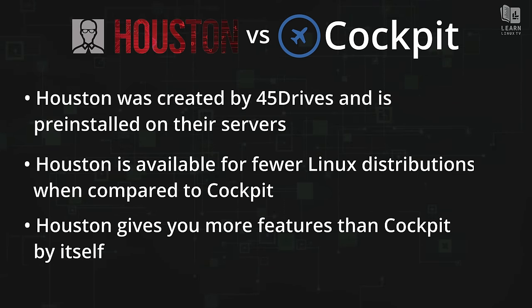Here we have Cockpit from earlier in the video. I'll navigate to the new server I just set up — we set up Houston at port 9090, which is the default port. Nothing is different so far; we'll just accept the certificate warning. I'll type in the credentials for my Linux user account on this server and log in. Houston is working — we've successfully installed it on our server.